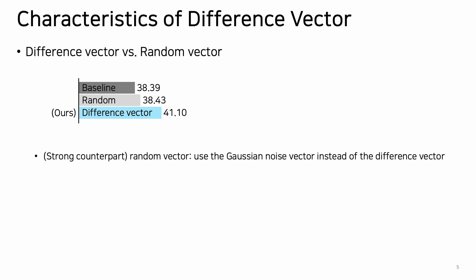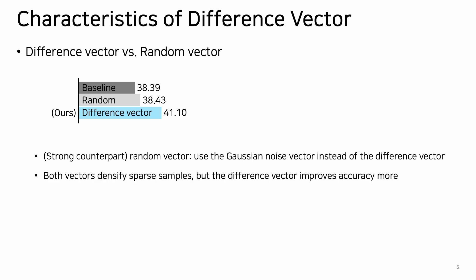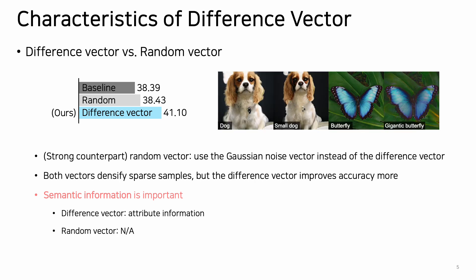From this section, I will present the characteristics of the difference vector. First, we compare our difference vector and the random vector as a strong counterpart in the sense of sample densification. The results show that the accuracy of the difference vector is higher than the random vector, although both vectors densify sparse samples. This demonstrates that semantic information is important, because the difference vector embeds semantic attribute information while the random vector does not.